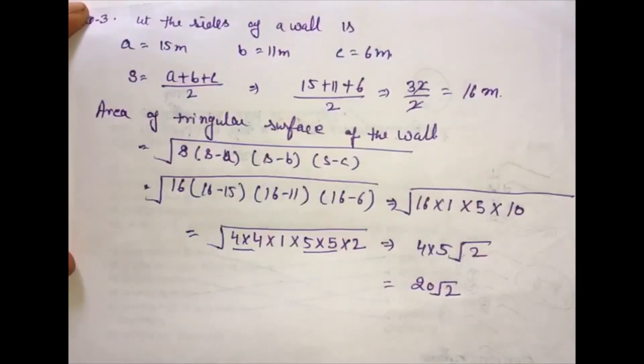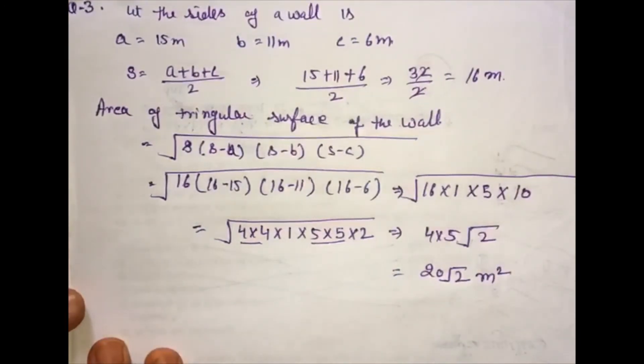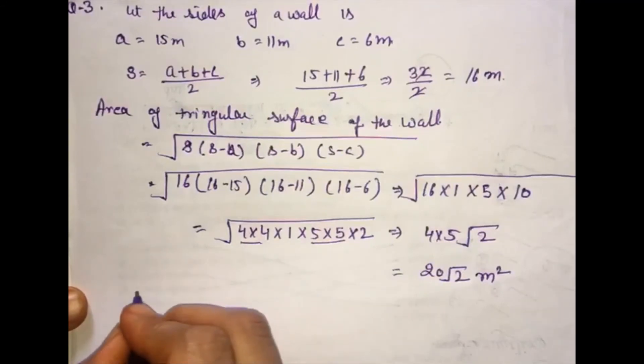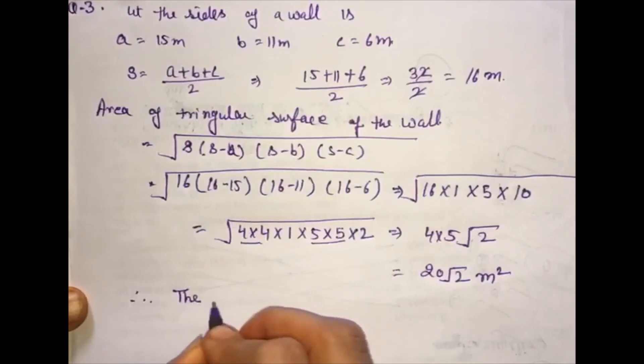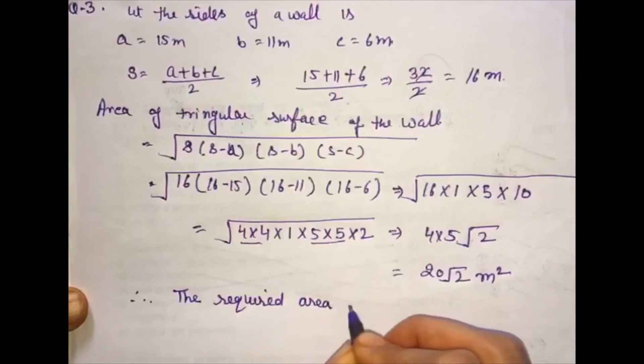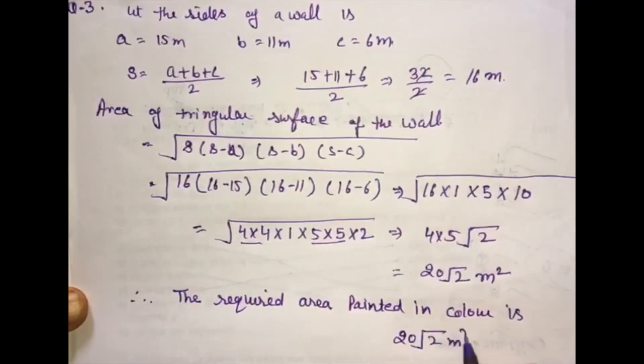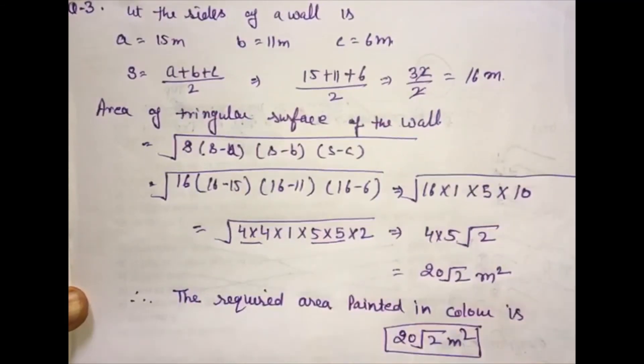This is the area to be painted. Therefore, the required area painted in color is 20 root 2 square meters. That's it.